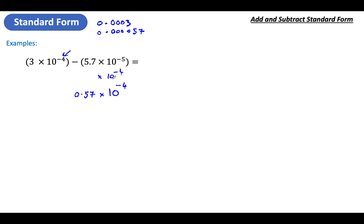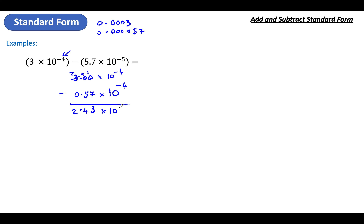I'll rewrite the other number above, which is 3. We're going to take them away — steal from over here. 10 take away 7 is 3. 9 take away 5 is 4. 2 take away nothing is 2. Times by ten to the power of negative 4 still.